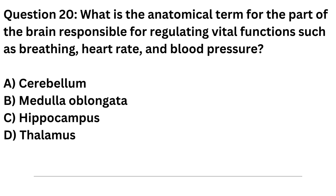Question 20. What is the anatomical term for the part of the brain responsible for regulating vital functions such as breathing, heart rate, and blood pressure? A. Cerebellum. B. Medulla oblongata. C. Hippocampus. D. Thalamus.